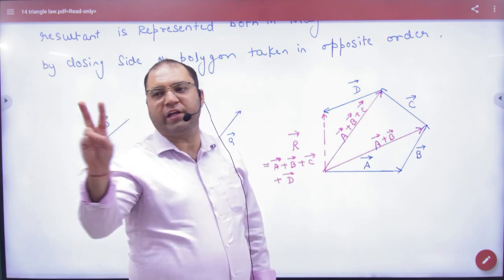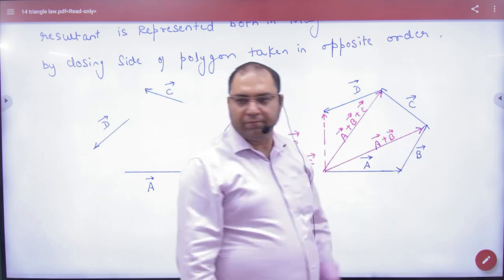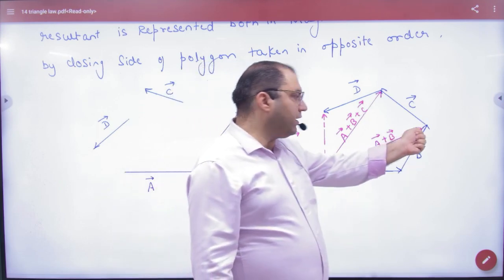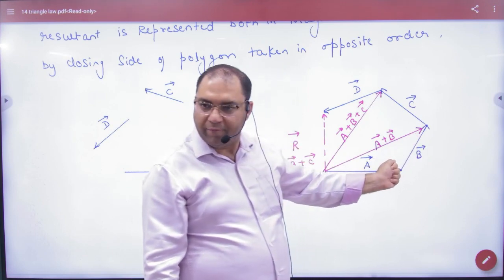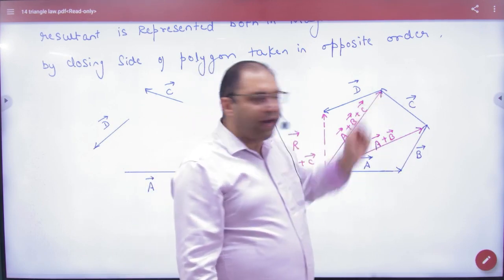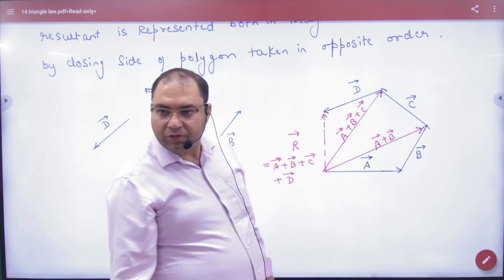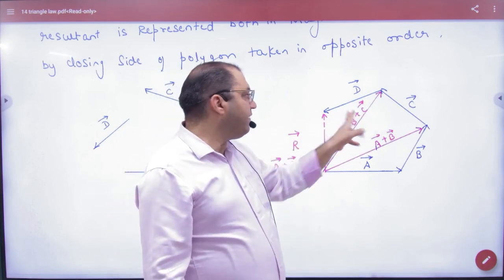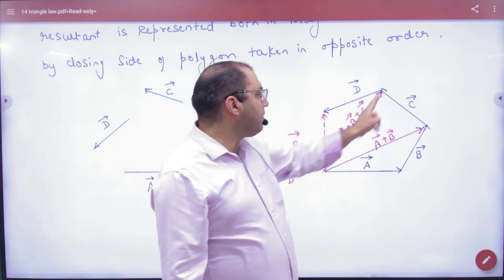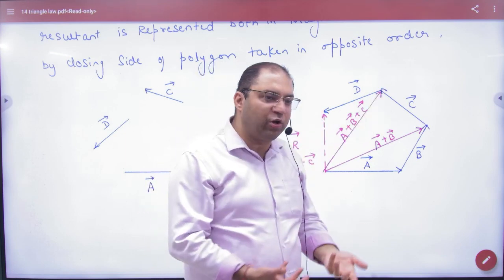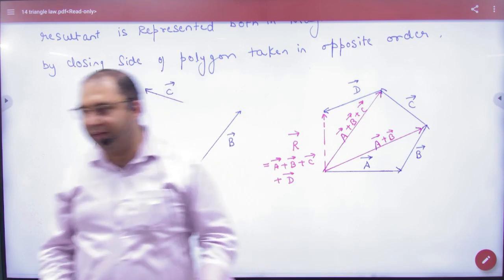If you take two vectors like A vector, B vector, if you take the resultant, if you put the triangle law, then A vector and B vector, then add C vector. So a new triangle closing side. So triangle law. So A vector, B vector plus C vector, then add another vector, closing side. So A vector, B vector, C vector. This will be the triangle law, this will be the polygon law. Okay?